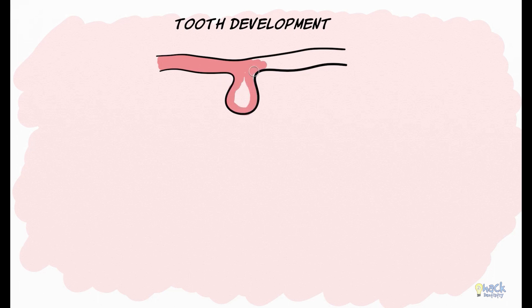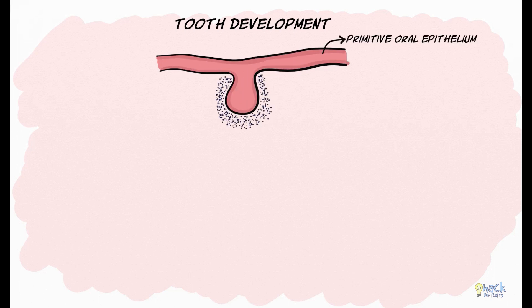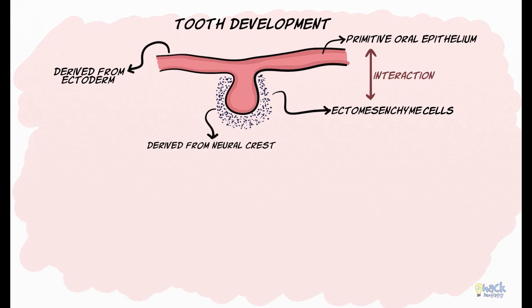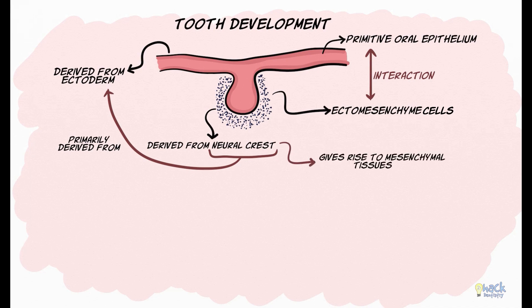The development and growth of teeth is a complex process of interactions between the primitive oral epithelium and the underlying ectomesenchymal cells. The epithelium is derived from the ectoderm of the first pharyngeal arch, while the cells of the ectomesenchyme are neural crest in origin. Since the neural crest cells are primarily derived from the ectoderm and eventually give rise to the mesenchymal tissues, they are called ectomesenchymal cells.